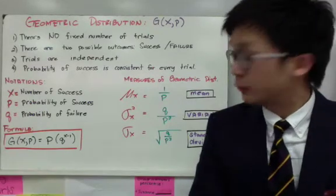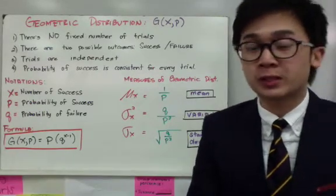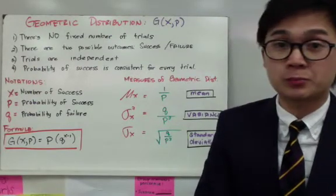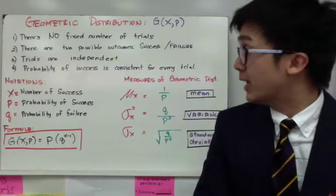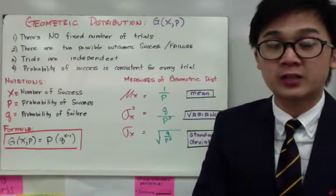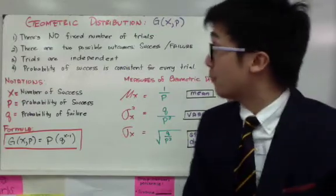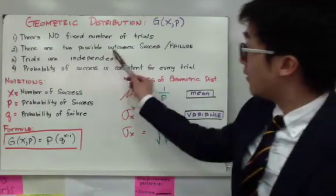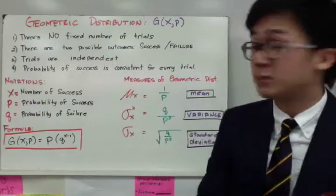Geometric distribution is pretty much related to binomial distribution. The only thing that's different between geometric distribution and binomial distribution is condition number one. For binomial distribution, we know that there's a fixed number of trials, but in geometric, there's no fixed number of trials. All the rest of the conditions are pretty much the same.